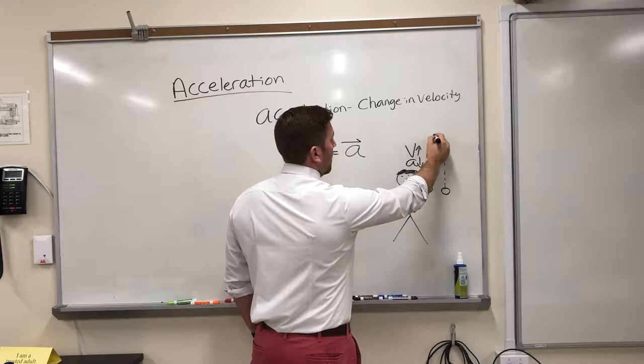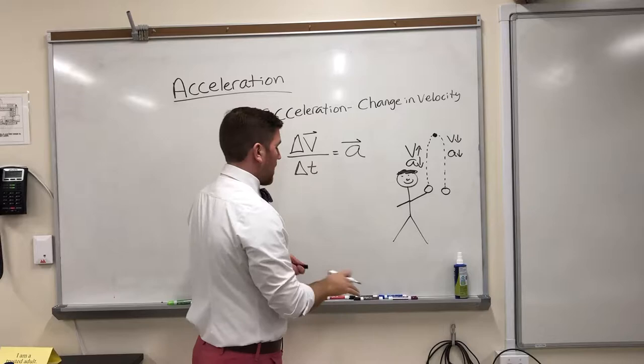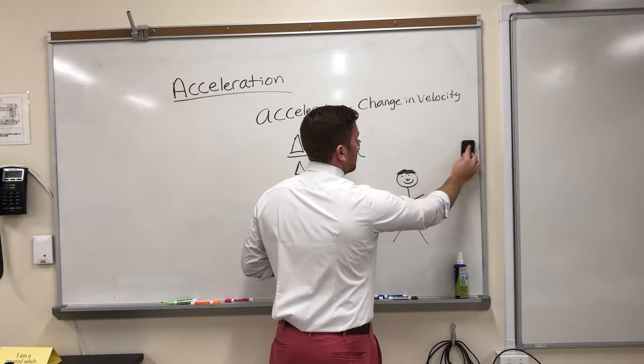And then the velocity changes. Now it's in the same direction as the acceleration, which means that it's going to speed up as it goes back down. So it's a pretty simple example of acceleration and velocity potentially being in the same direction and opposite directions.